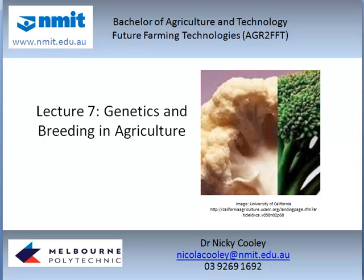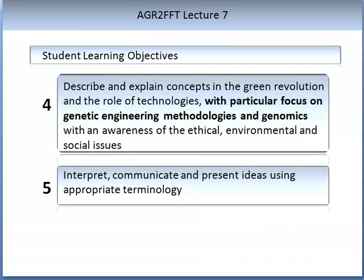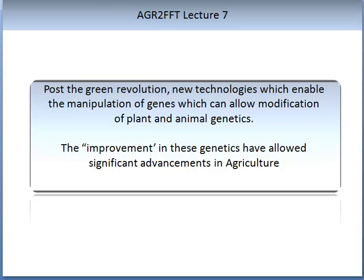My name is Dr Nikki Cooley. The learning objectives will be similar to that of Lecture 6, where we learn the background so that it will enable us to focus on genetic engineering methodologies and genomics and breeding. The image on the front of the slide was that of the vegetables cauliflower and broccoli. These are derived from the same genetic ancestor, Brassica, but were developed over many years into individual and very different vegetables, and this was achieved through selection and breeding.